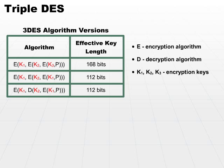Triple DES is the original DES algorithm applied three times. It doesn't make a lot of sense to apply an algorithm three times with the same key, so we need three different keys for each iteration of the application. And P is just our regular plain text.